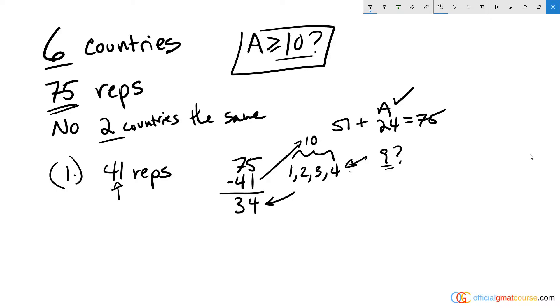Well, if A sent nine, and the other country that was number one sent 41, that means that we would have sent a total of 50 reps so far, and we need to send a total of 75, which means there's 25 representatives left to be sent from the other four countries. So the other four countries would, if I maximize them, I can make them eight, seven, six, and five. And this is as large as I can make them while making A less than 10.